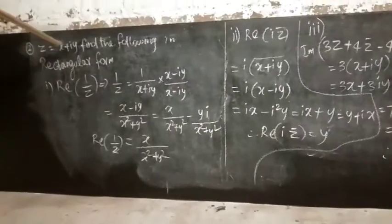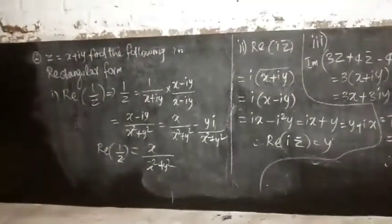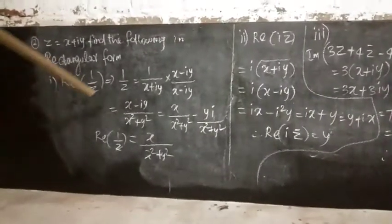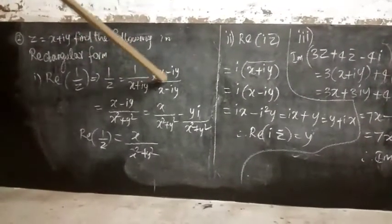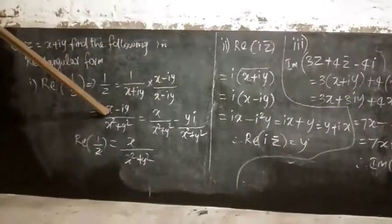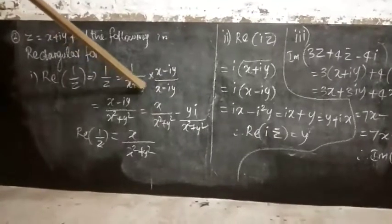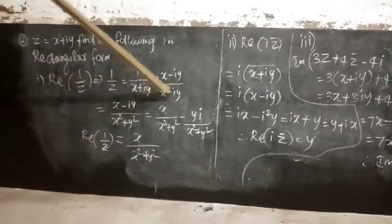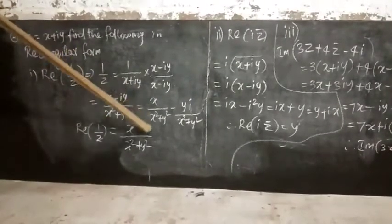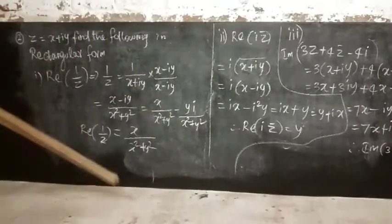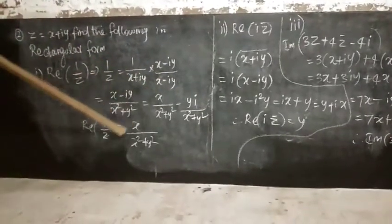Given z equals x plus iy, find the following in rectangular form. First subdivision: real part of 1/z. So 1/z equals 1/(x + iy). Multiply by (x - iy)/(x - iy). Numerator is x minus iy. Denominator: since i squared is minus 1, it becomes x squared plus y squared. Written in rectangular form: x/(x² + y²) minus i·y/(x² + y²). Therefore, real part of 1/z equals x/(x² + y²).